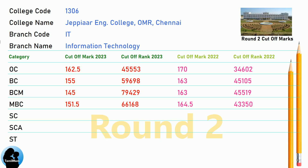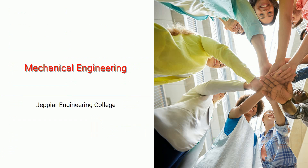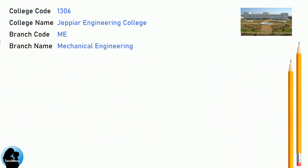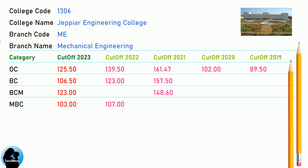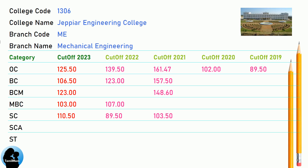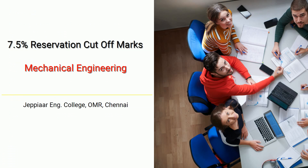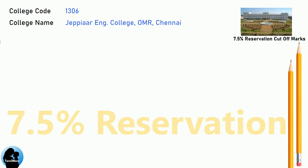DNA Cut-off for JPR Engineering College in Information Technology. DNA 7.5 Reservation Cut-off for JPR Engineering College in Mechanical Engineering.